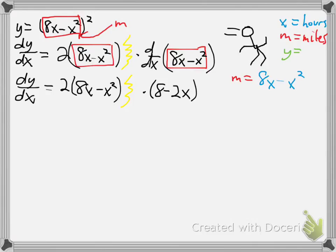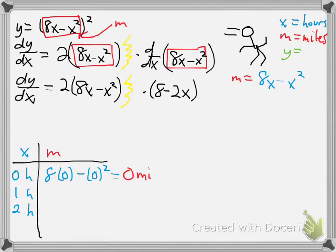We can use this equation now to build a table of values. Let's say we want to know how many miles you've gone so far after zero hours of running, after one hour, after two hours. And so we're just going to plug in zero for x in this equation: 8 times zero minus zero squared. And we get that after zero hours, you've gone zero miles, which makes sense because the race hasn't started yet. After one hour, if you type this into a calculator, you've gone seven miles. And after two hours, you've gone 12 miles.